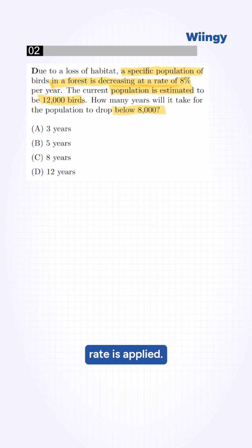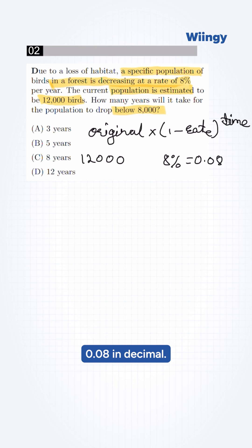Here, the decreasing rate is applied. So we apply the decay formula, which is original times 1 minus rate, raised to time. The original amount is 12,000. Rate is 8%, which is 0.08 in decimal. So we put this into our formula.